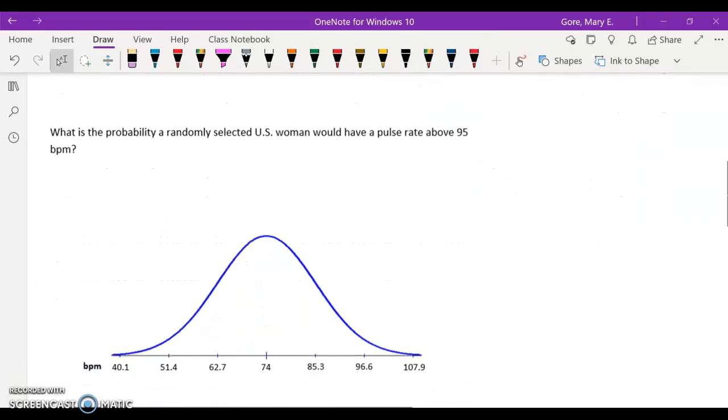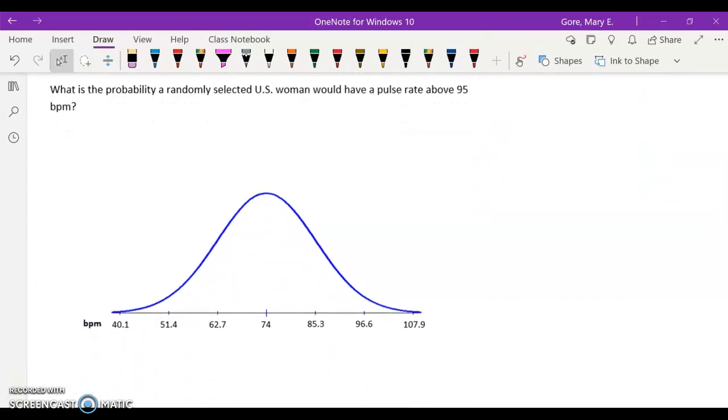Let's try another one. What is the probability that a randomly selected U.S. woman would have a pulse rate above 95? Here's our table again. I'm going to find 95 here, which appears to be over here, 95 beats per minute. We're going to do the same thing, figure out what that z-score is.